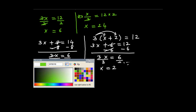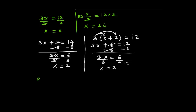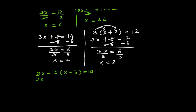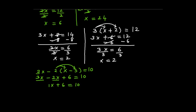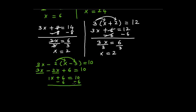Now suppose I am taking one example as 3x minus 2 times (x minus 3) is equal to 10. Now 3x stays as it is. Since we have a parenthesis, I am multiplying each term inside the parenthesis with negative 2, using the distributive law. So negative 2 times x gives negative 2x, and negative 2 times negative 3 gives positive 6, equal to 10. Now 3x and negative 2x are like terms, so 3x minus 2x is 1x. So 1x plus 6 is equal to 10. Add negative 6 on both sides. So 1x is equal to 4, meaning x is equal to 4.